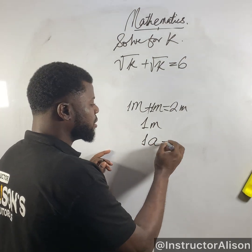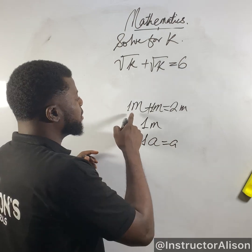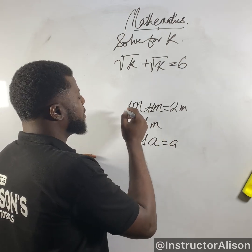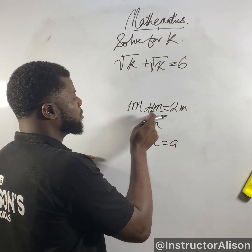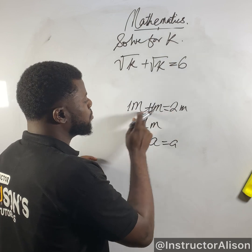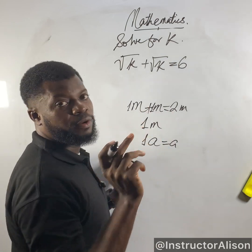1 multiplied by a would give you a. Similarly, m plus m — they have an invisible 1. Those ones add up to give you 2, because the m's are common. Just pick one of them.